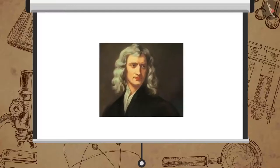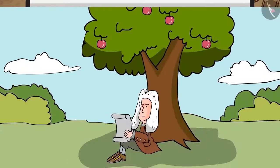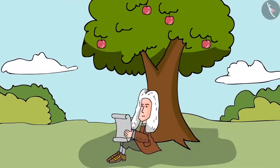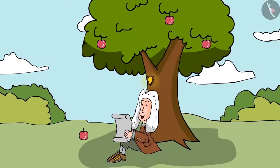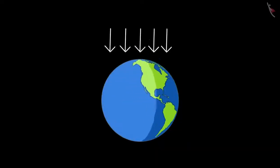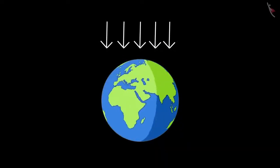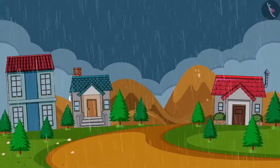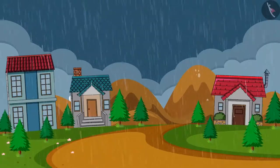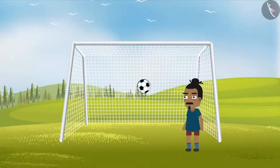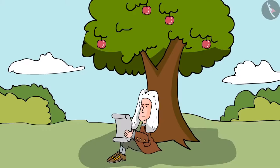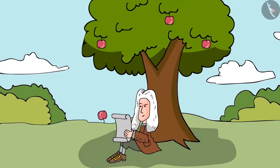Remember Sir Isaac Newton, who formulated the well-known laws of motion. It is often said that in 1665, he came up with the idea of gravity when an apple fell on his head. Here are a few examples of objects attracted towards the earth. Rain always falls towards the earth. We observe that as soon as a football rises above the field, it falls back on earth. An apple detaching from the branch of a tree falls to the ground.